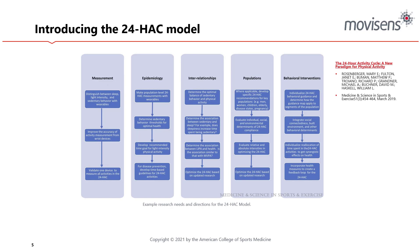Looking at interrelationships: determining the optimal balance between the different components — sedentary behavior, physical activity, and sleep. Does sleepiness increase time spent being sedentary? If you can fix the sleep, can you then reduce sedentary time? Determining the optimal association between light intensity physical activity and health — is it similar to moderate to vigorous physical activity or is a different balance required? And optimizing the model based on research for specific populations: people in different disease states, diabetes, pregnancy, women, children, the elderly.